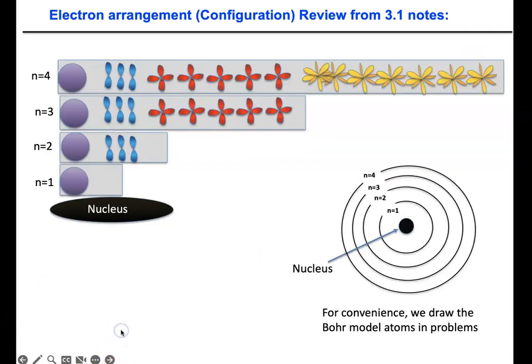First, let's look at what we learned in the previous lesson, 3.1. If we draw an atom using the Bohr model, in the center you have the nucleus. And you have concentric spheres, energy levels 1 through 7. N equals 4 is energy level 4.